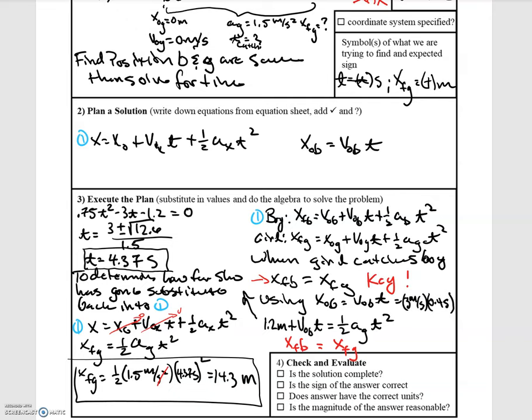So you start by setting their final positions equal to each other and then you need to solve for each of those final positions. So the boy, the initial position for the boy is equal to his constant velocity times the time that it takes till the girl starts running after him. And so that was given in the problem as 0.4 seconds. So he's starting 1.2 meters ahead when the girl begins to run. And so this was the point that I missed in the original solution.